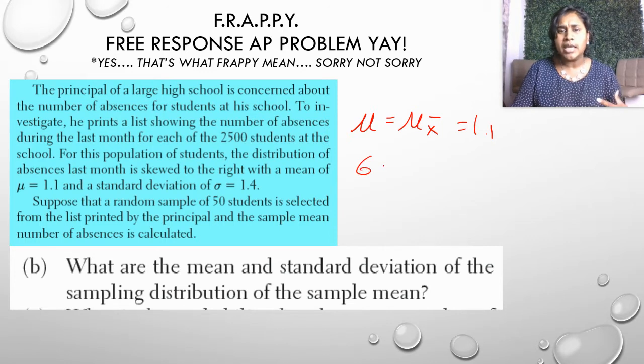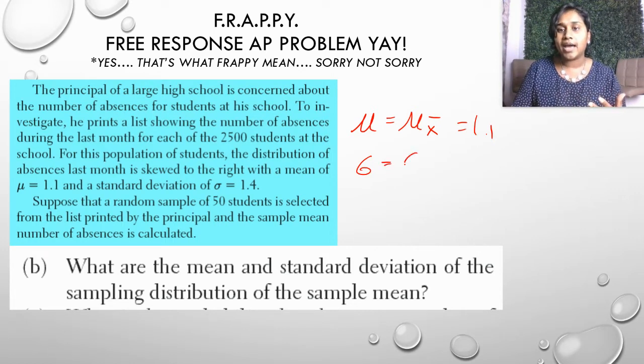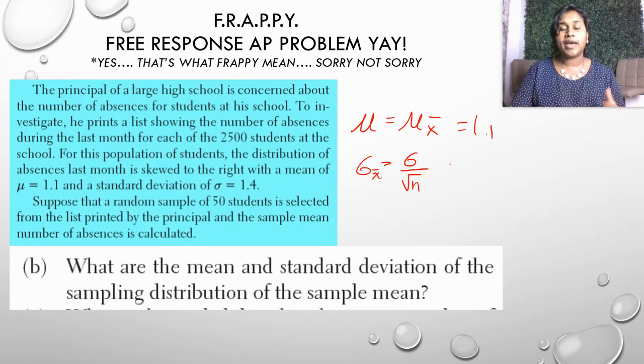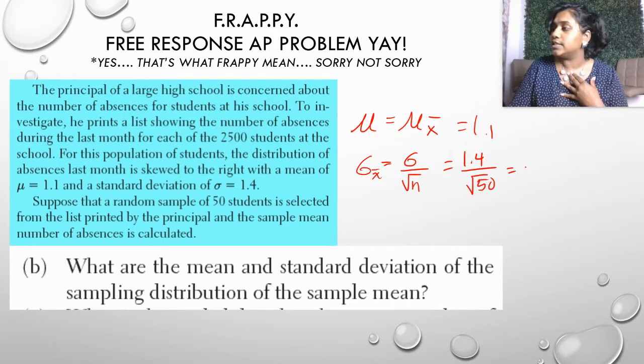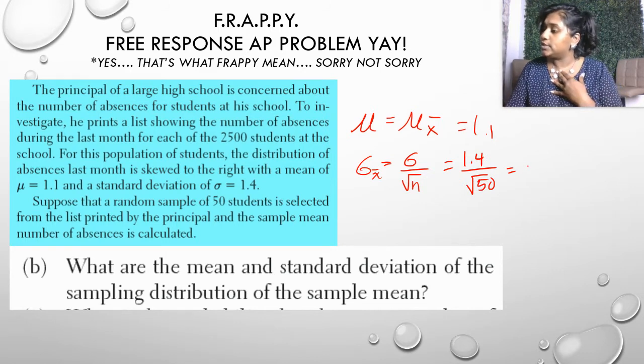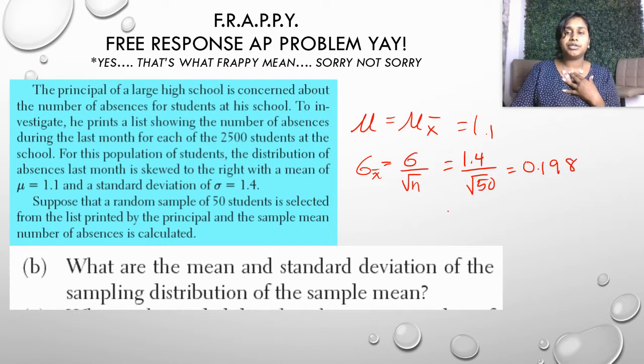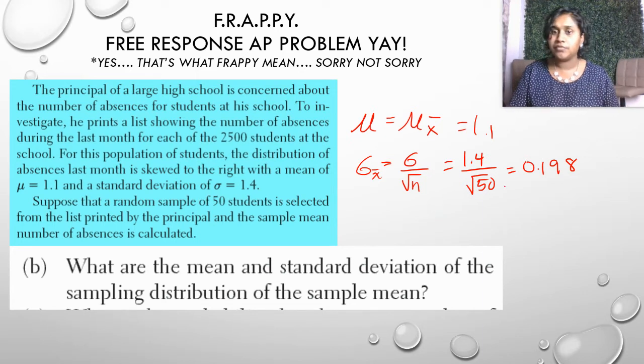What about standard deviation? We can't just say that one point four from the population automatically applies. It doesn't work that way. We have to think of it just a little bit further. In fact, we have a nice neat sampling distribution. We have a nice neat formula for that. We take the population's standard error and we divide by the square root of the sample size, which was 50. And we end up with a number, 0.198 is our standard deviation of the sampling distribution.